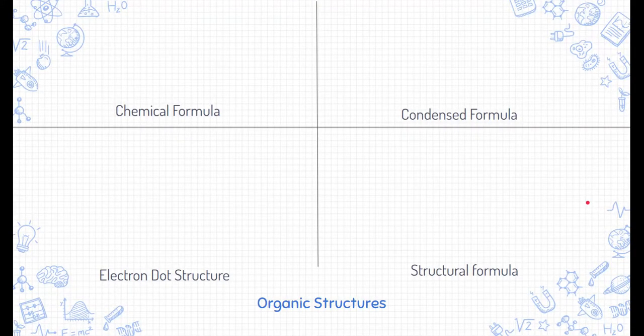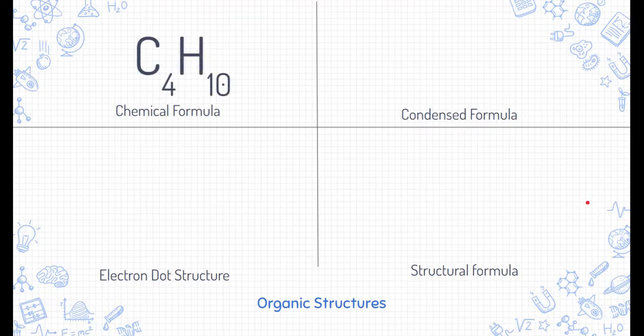Speaking of organic structures, let's take a look at the various organic structural models. Let's start with the upper left-hand corner. This is a chemical formula. This is the symbols and how many elements are within, are bonded together within that molecule. So in this, C4H10. This is butane, by the way.